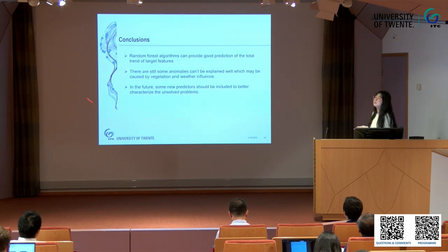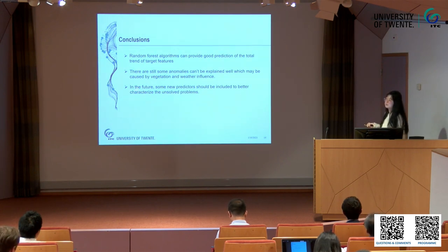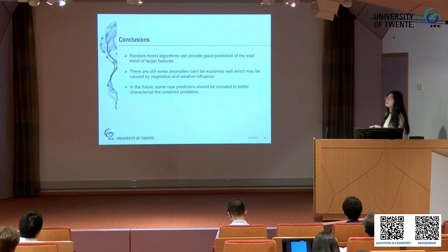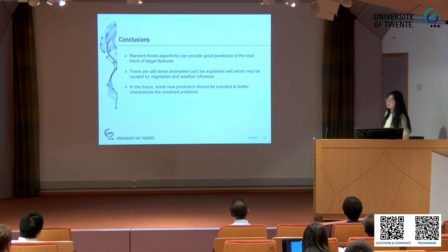Here are some early conclusions about my experiment. The random forest algorithms can provide good prediction of the total trend for the target features. But there are still some anomalies that can't be explained well, which may be caused by vegetation and weather influences. In the future, I will test some new predictors in my model to try to solve these problems.